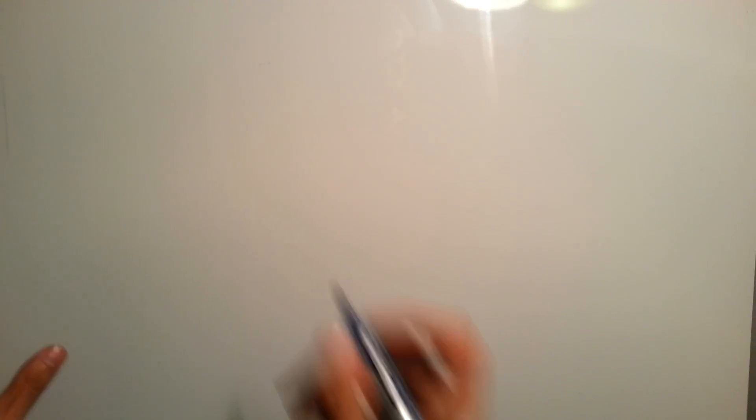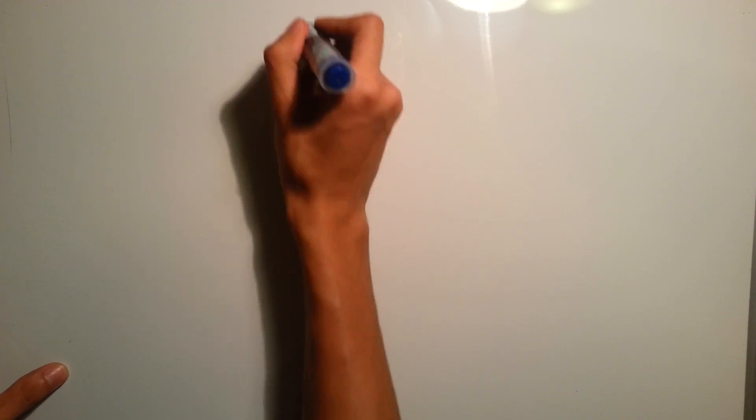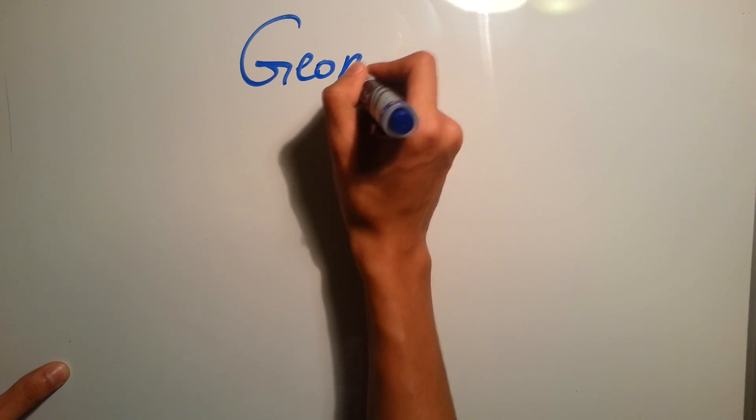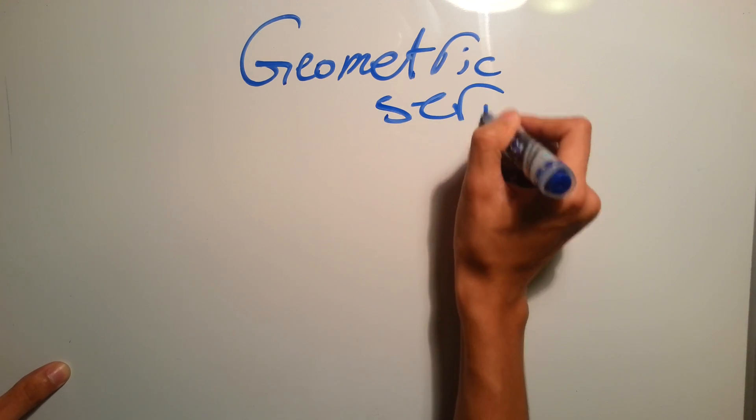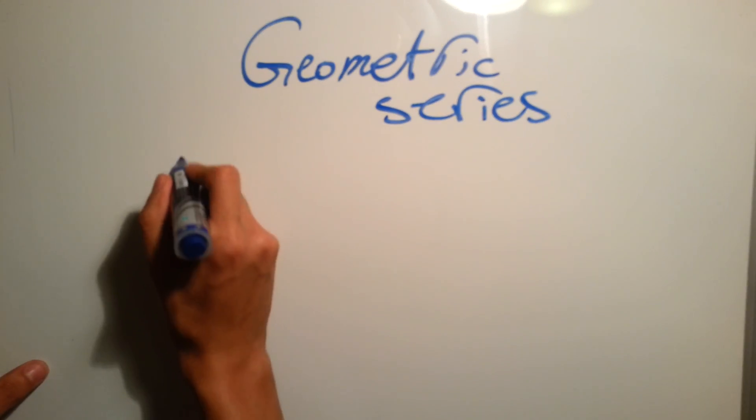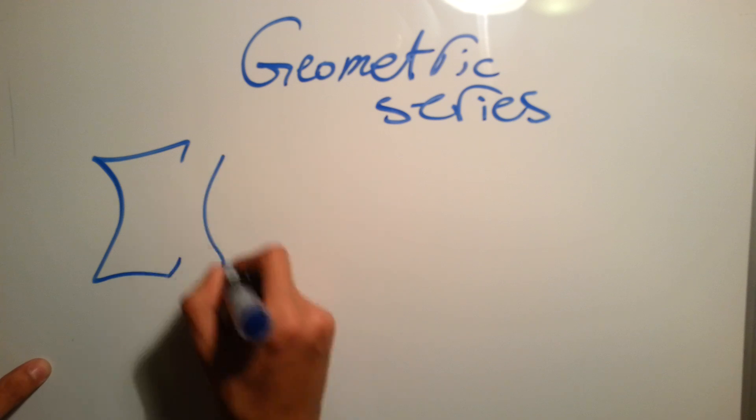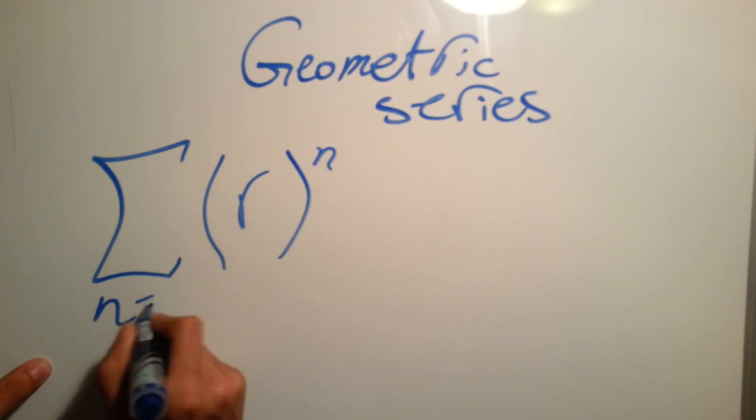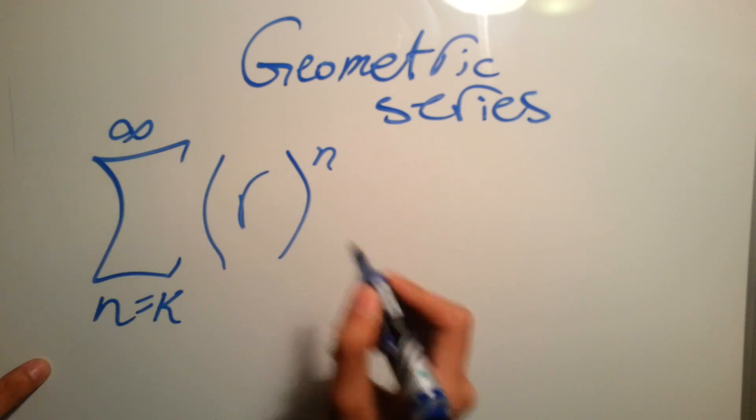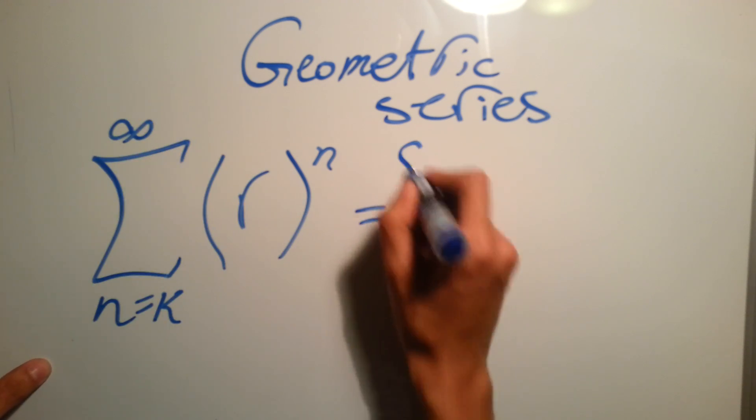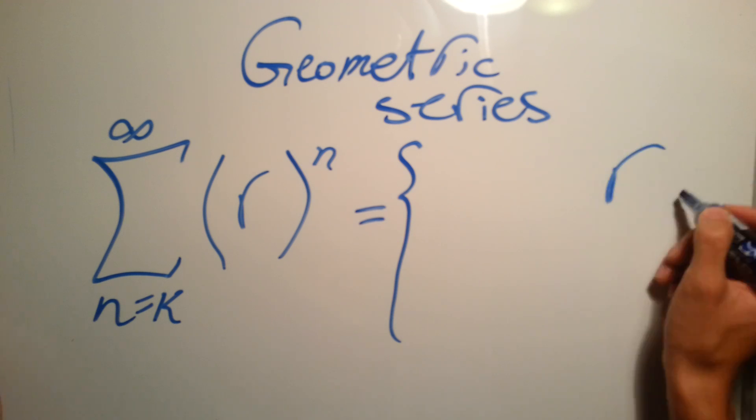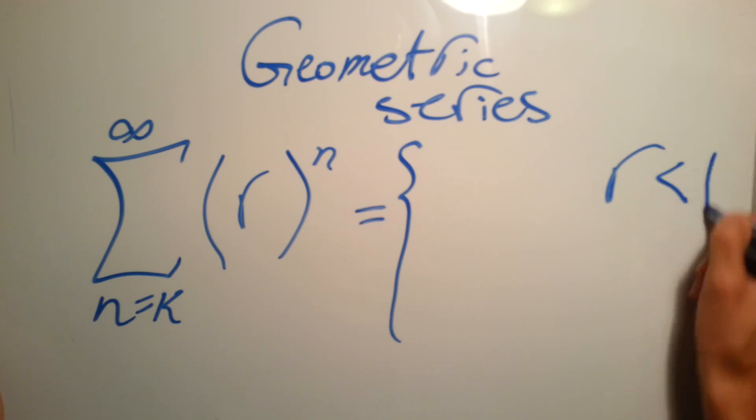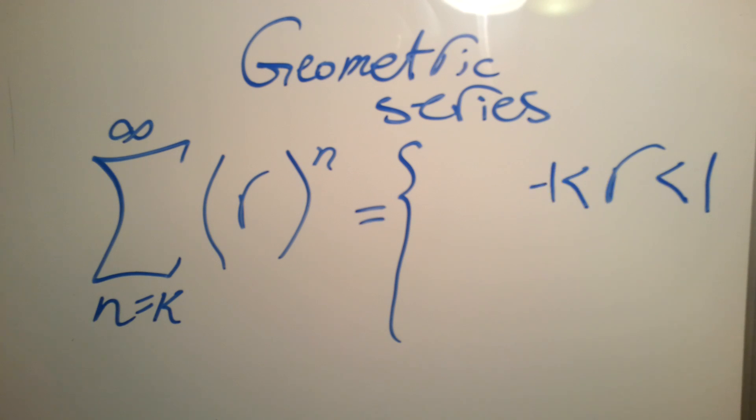So the geometric series is of this shape: the summation of r^n from n equals k up to infinity. And its solution in mathematics is, if r is a fraction, which means it's between minus one and one, then its solution will be as follows: